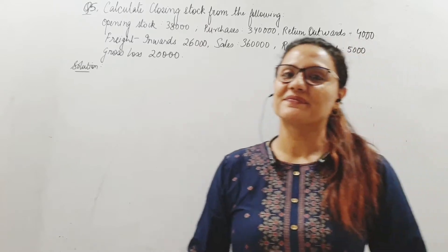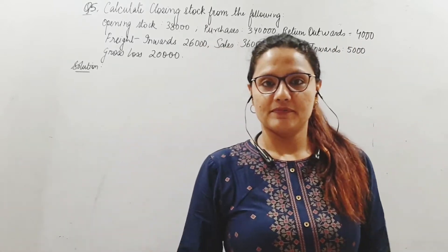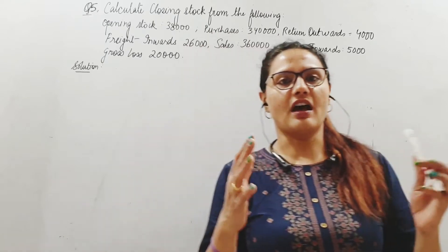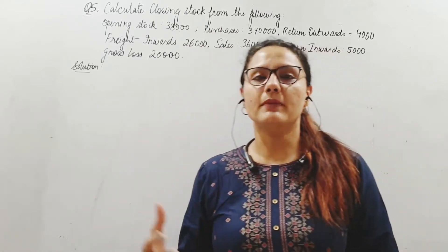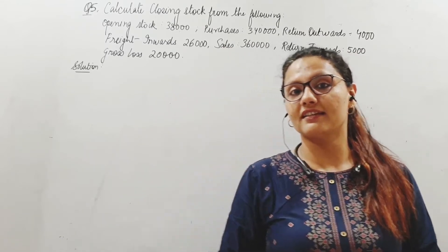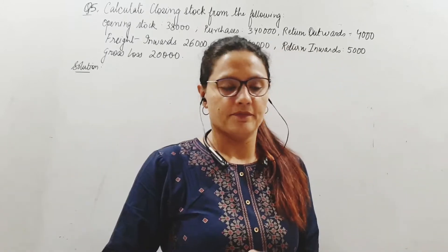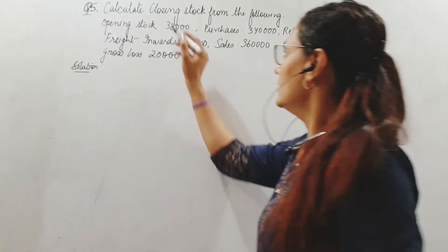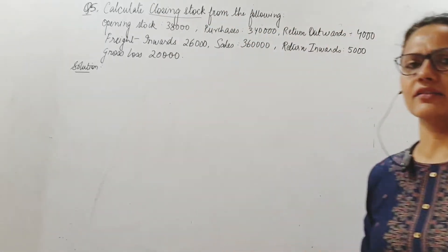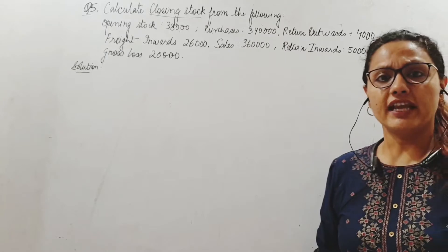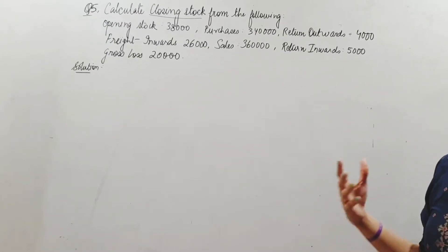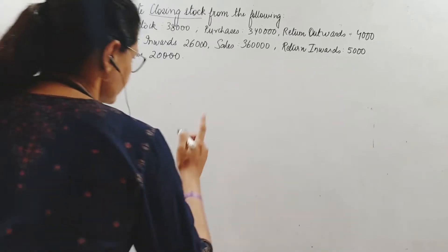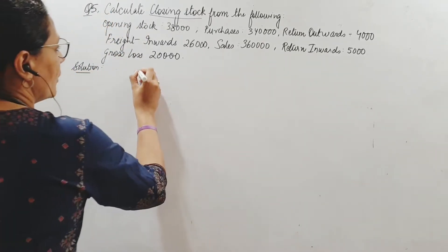Good morning, children. Now we are doing final accounts. In the last video we did how to draft a trading account, what all goes into a trading account, what we mean by direct expenses, why we subtract closing stock from there, and what is gross profit or gross loss. Here we are doing a sum where we have been asked to find out the closing stock. All other things are given — opening stock, purchase return outward, freight inwards, sales return, and gross loss. There are two ways: you can use the cost of goods sold formula or you can prepare the trading account.